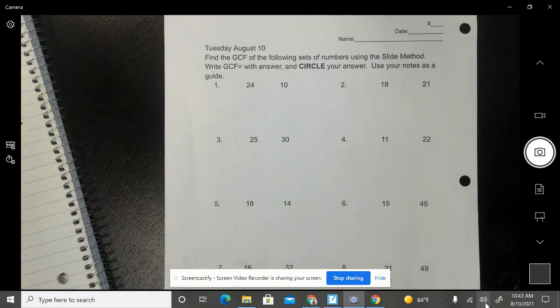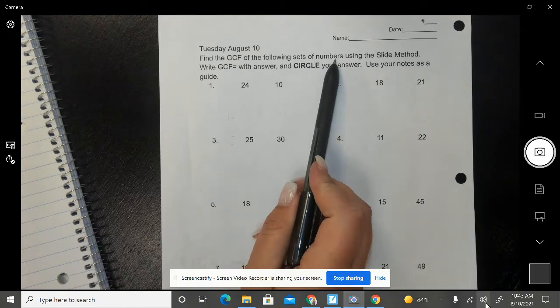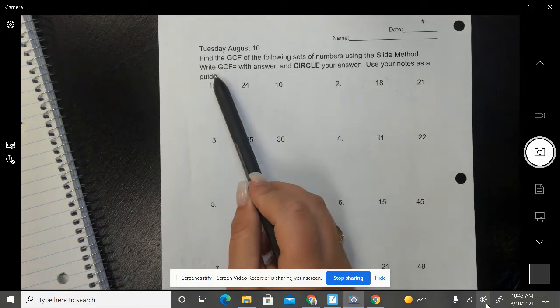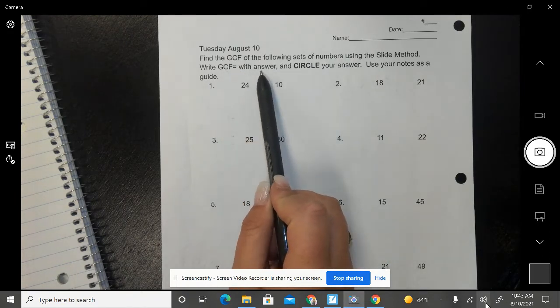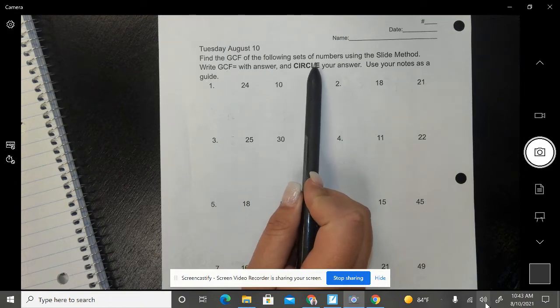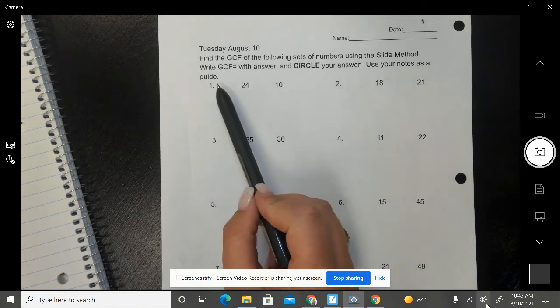So I'm going to go ahead and start us off by reading the directions. It says find the GCF of the following sets of numbers using the slide method. Write GCF equals with the answer and then circle your answer at the end. Use your notes as a guide.